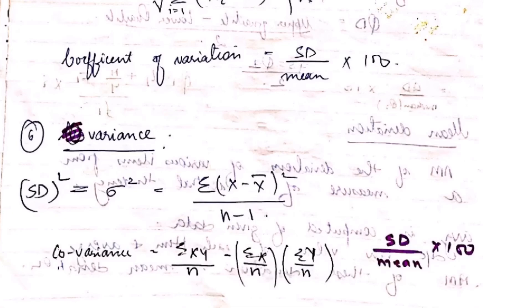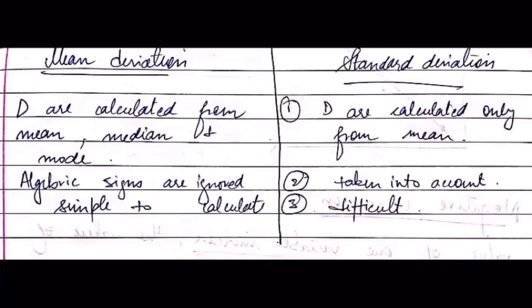To avoid confusion between mean deviation and standard deviation: mean deviation means taking the average of all the deviations of the given data, whereas standard deviation is calculated only from the mean.